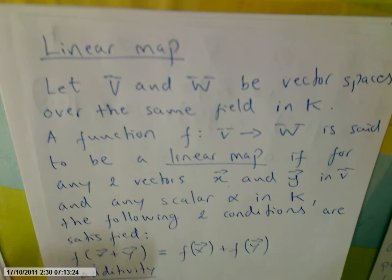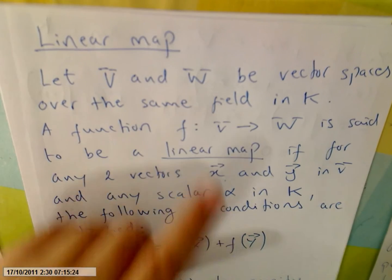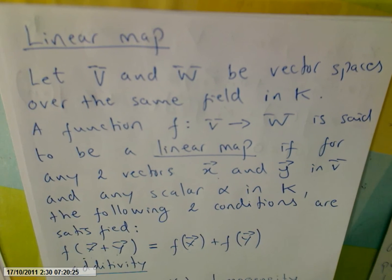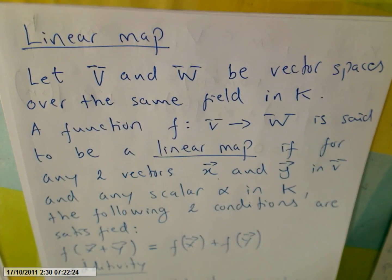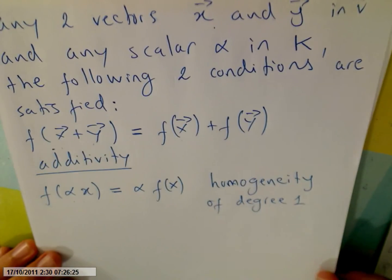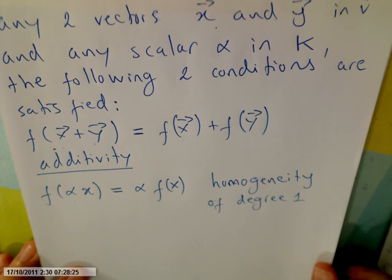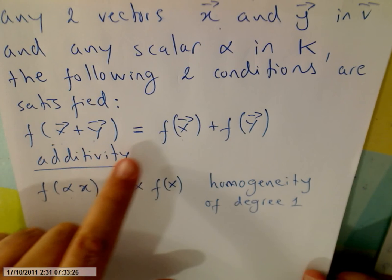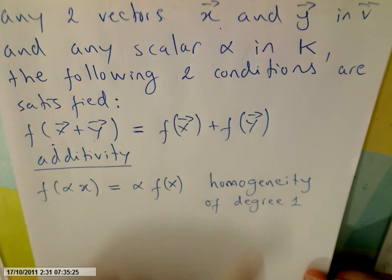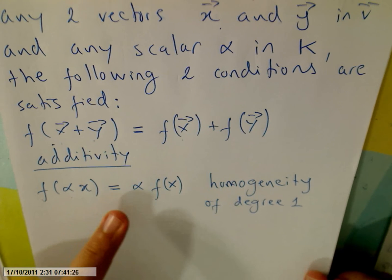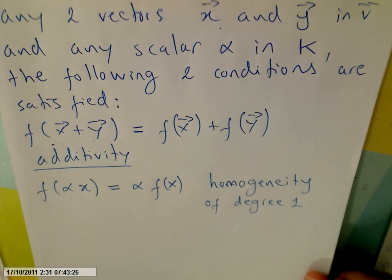Sometimes V and W can be in different fields, but I'm not going to get into that. So I've given you an idea of what a linear map is. These two conditions have to hold: f(x+y) = f(x) + f(y) and the homogeneity f(αx) = α·f(x).